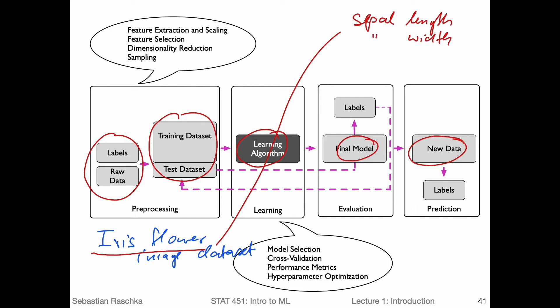Assume now you have extracted these features. So from the raw data — let's say the images — you get the training set consisting of the sepal length, sepal width, petal length, and petal width. There can be additional steps of preprocessing, for example scaling the features or selecting features. Maybe you only want to select the petal dimensions, not the sepal dimensions. There's also dimensionality reduction, which is another broad topic that combines feature extraction and feature selection. We can also combine features and subsample the data set. There are many different preprocessing steps, and we will talk about a selection of them later in this course.